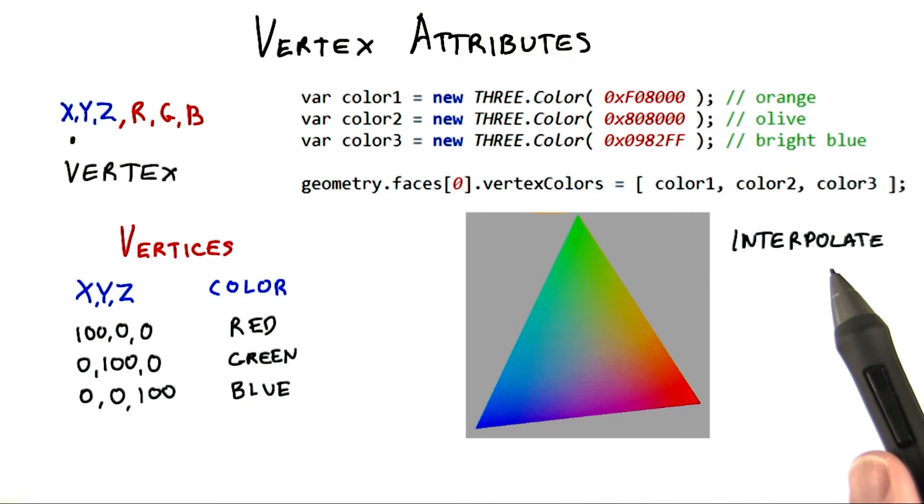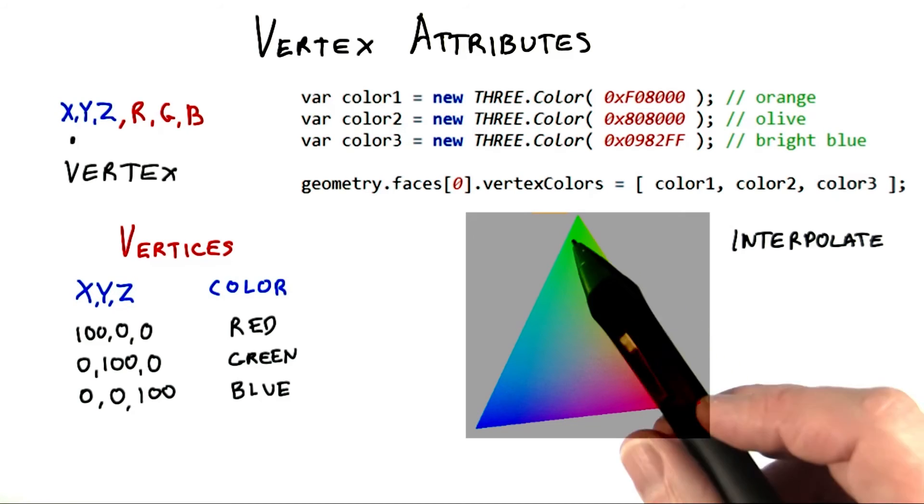To interpolate means to find a value in between two or more other values. In this case, the original data are the three corner colors: red, green, and blue.